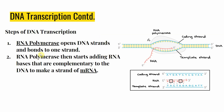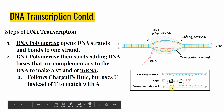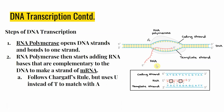The second step of DNA transcription is that RNA polymerase starts adding RNA bases that are complementary to the DNA to make a strand of mRNA — messenger RNA. When we say complementary here, this means following Chargaff's rule, but using U instead of T to match with our A's. Whenever there's an A in our template strand DNA, the RNA polymerase puts in a U — uracil — instead of a T, because RNA does not have thymine, it instead has uracil.